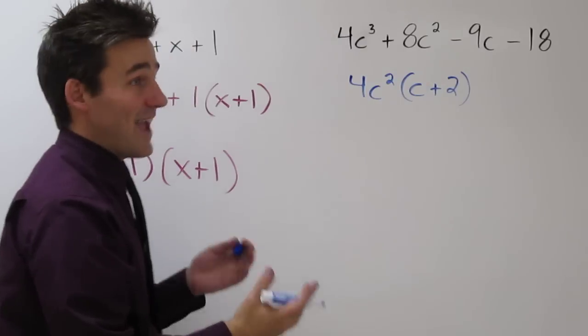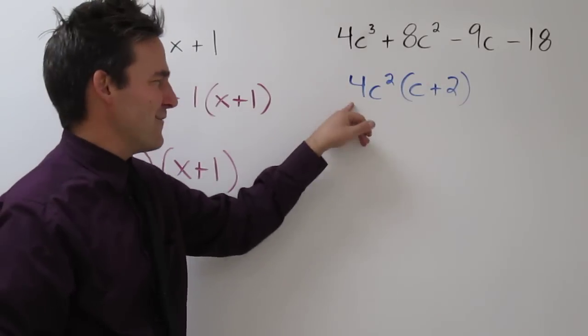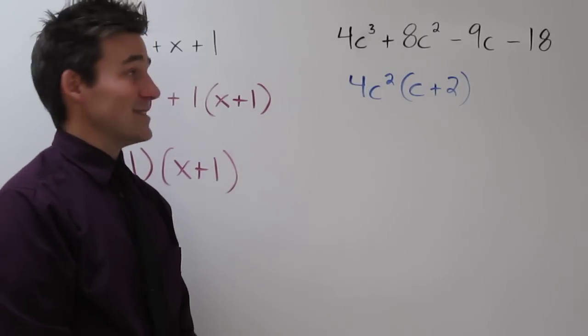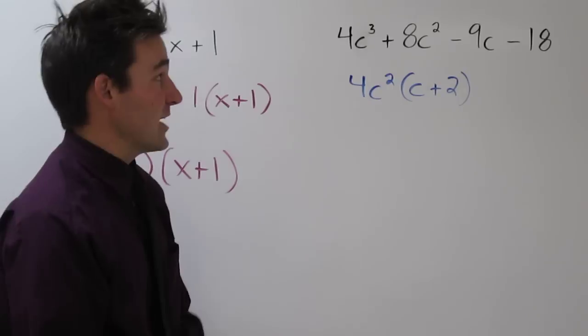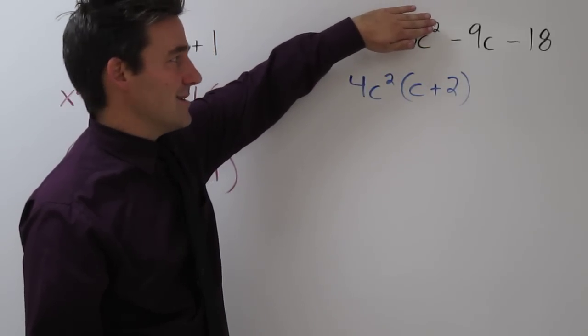And we can of course again confirm that by saying 4c squared times c, and 4c squared plus 2 would get us back to 4c cubed plus 8c squared. Let's look at our other side. Negative 9c minus 18.